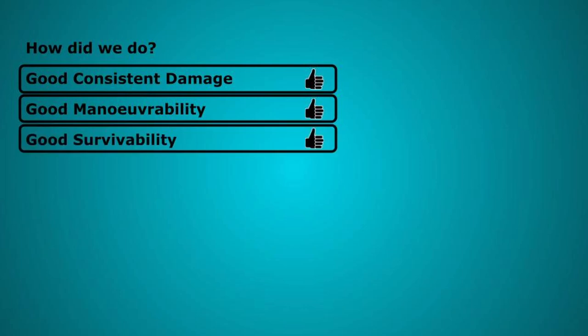Survivability. You have a good pool of hit points thanks to some levels in barbarian combined with a reasonable constitution score and maybe the tough feat. You can mitigate incoming damage with rage. You can stones endurance or uncanny dodge the damage. You can make dexterity saving throws with advantage and only take half damage if you fail or none if you pass. You can stay out of danger's way with your manoeuvrability and even if you did die it doesn't cost much to bring you back.